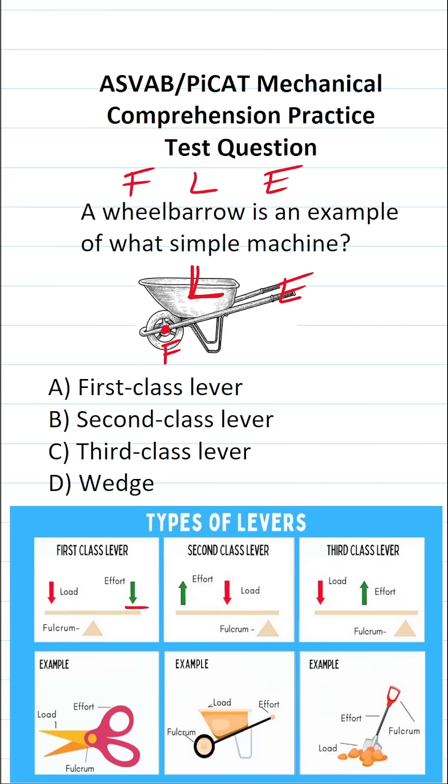Alright, so let's look at these classes of lever. In a first class lever, you can see that the fulcrum is in between the load and effort. That's not what we have in this case, so we know it's not a first class lever.